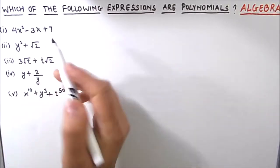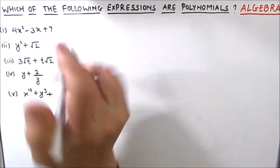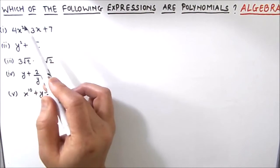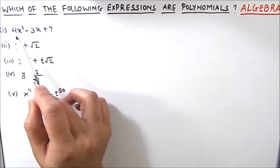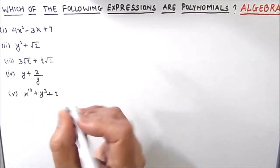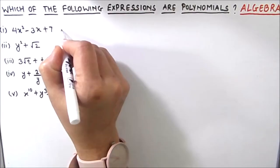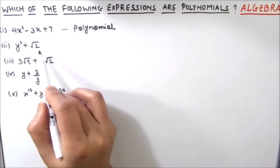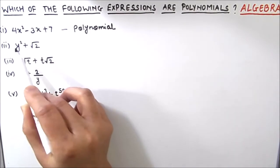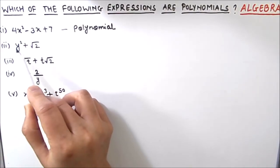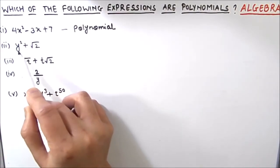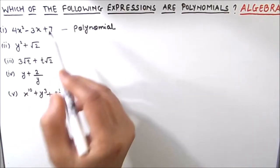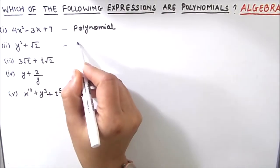The first expression is a polynomial because the power 2 is a whole number and it has three terms. For the second expression, we have a positive exponent of 2 and it has two terms — y squared and root 2. So this is also a polynomial.